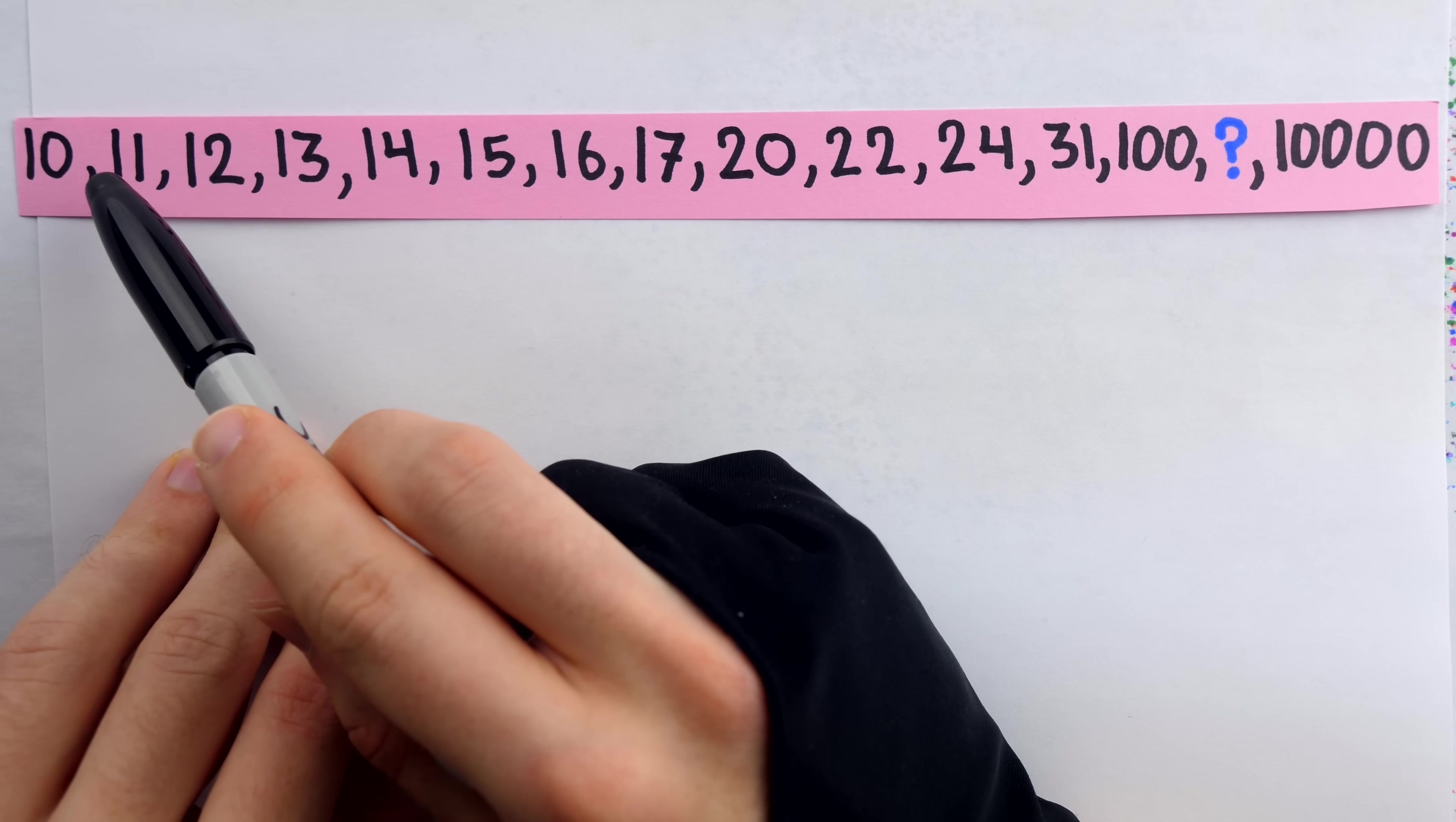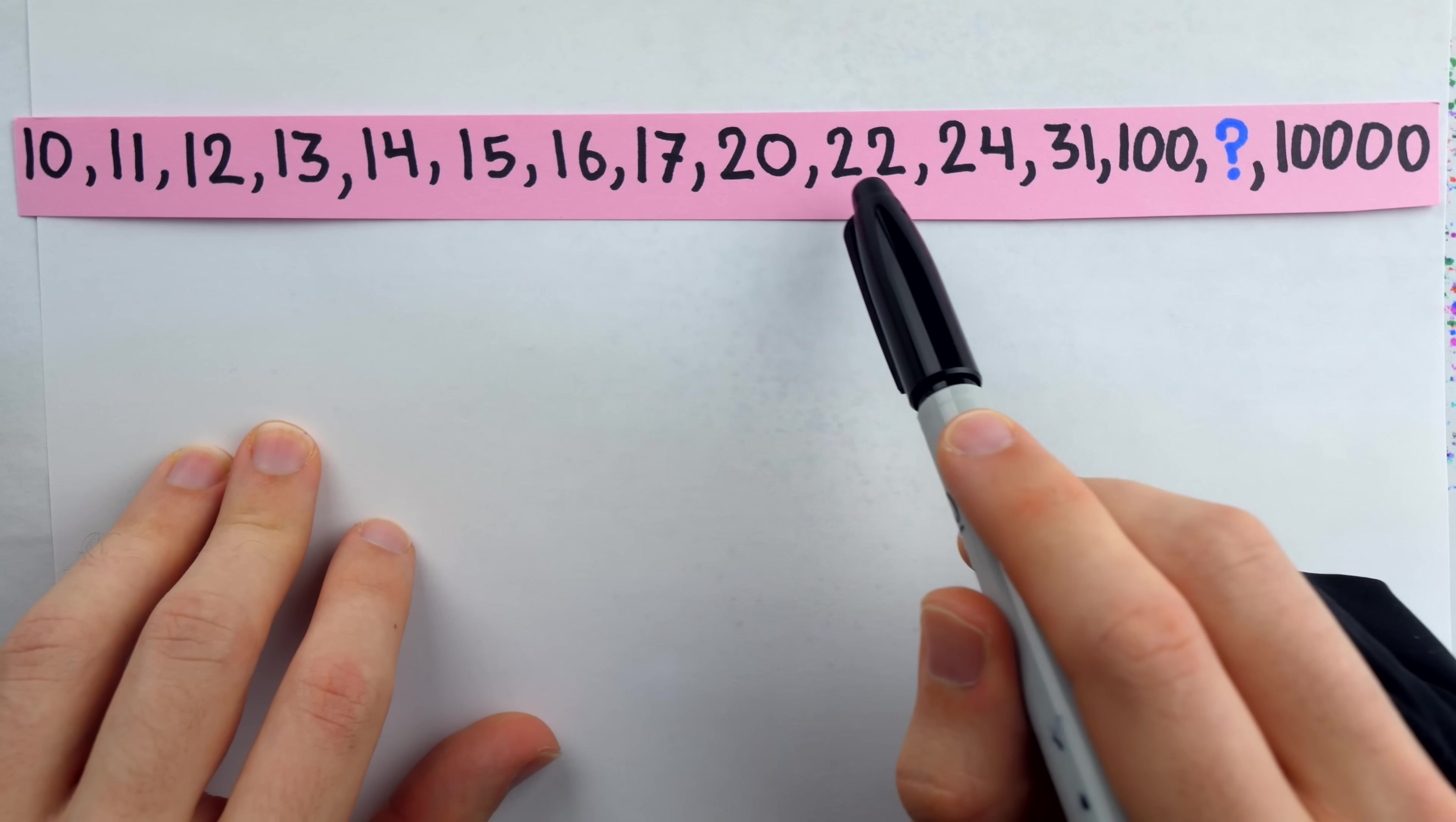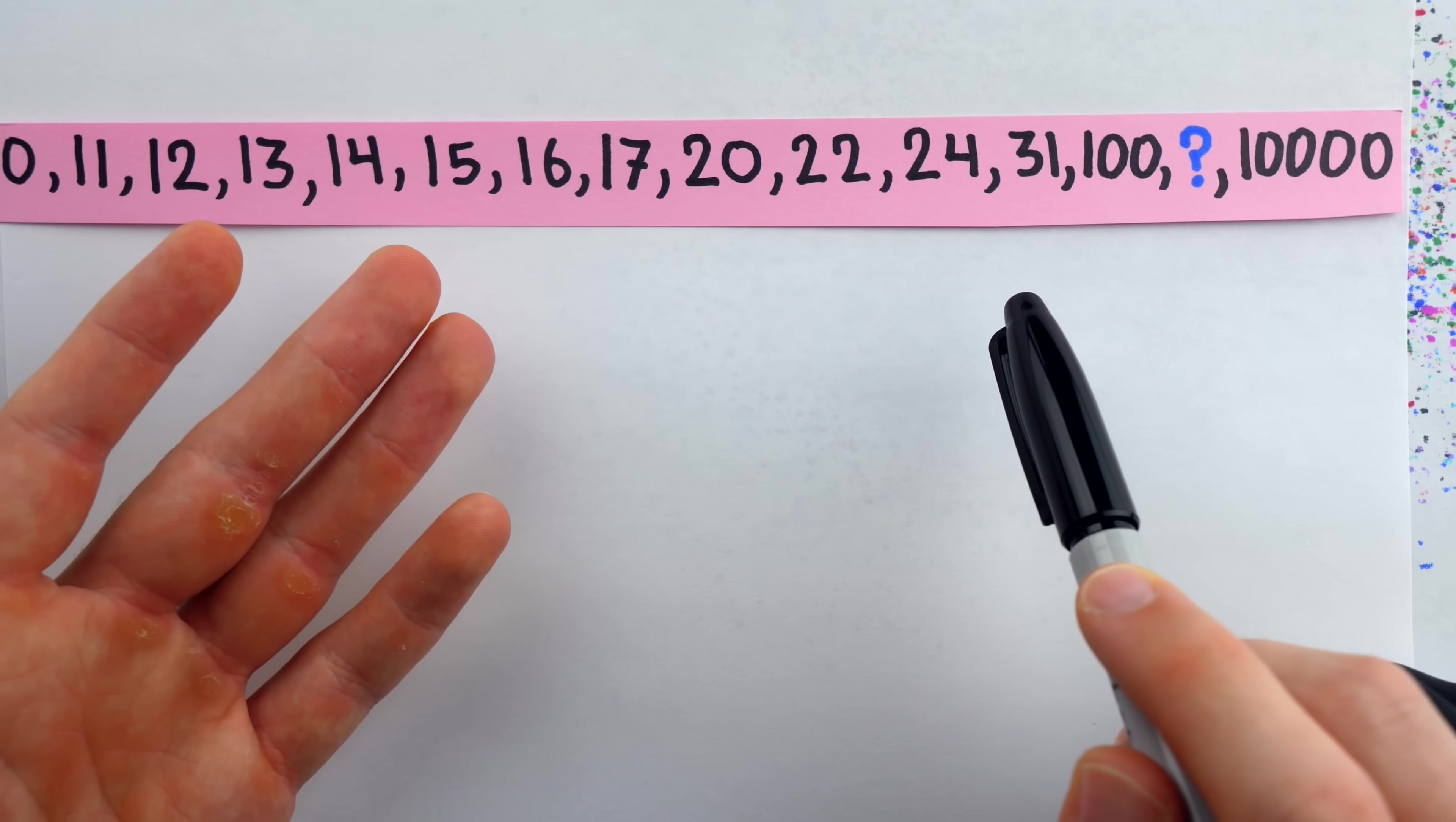What an awkward sequence. It goes up by ones, then by three, two, two, seven, 69. What is going on here?